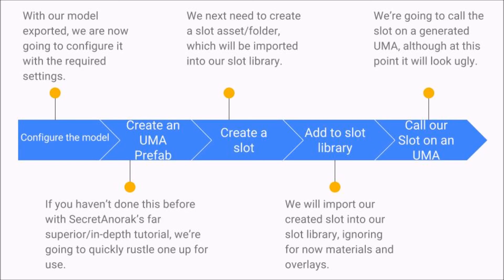We then add it to our slot library — so we create the slot, we create the component itself (for example, a t-shirt), then we add it to our slot library so it can now be called from script as part of our UMA. And then that is in fact our last step: we call the slot on a UMA. Once we've done this, we will have a lovely model in the game, but we won't actually have any design or textures, which brings us on to our final workflow.